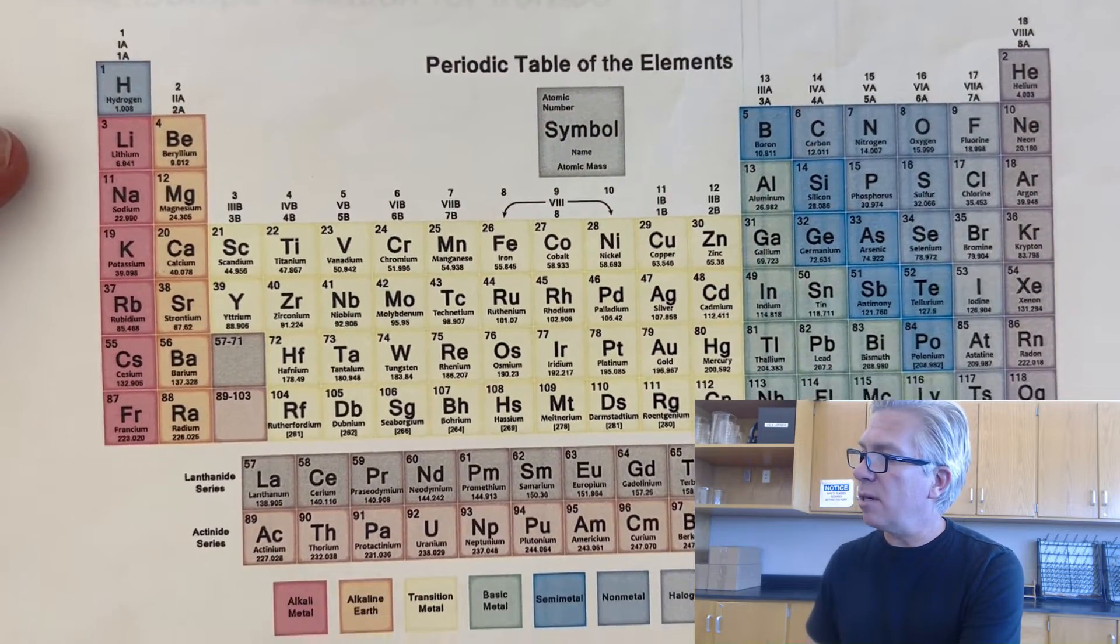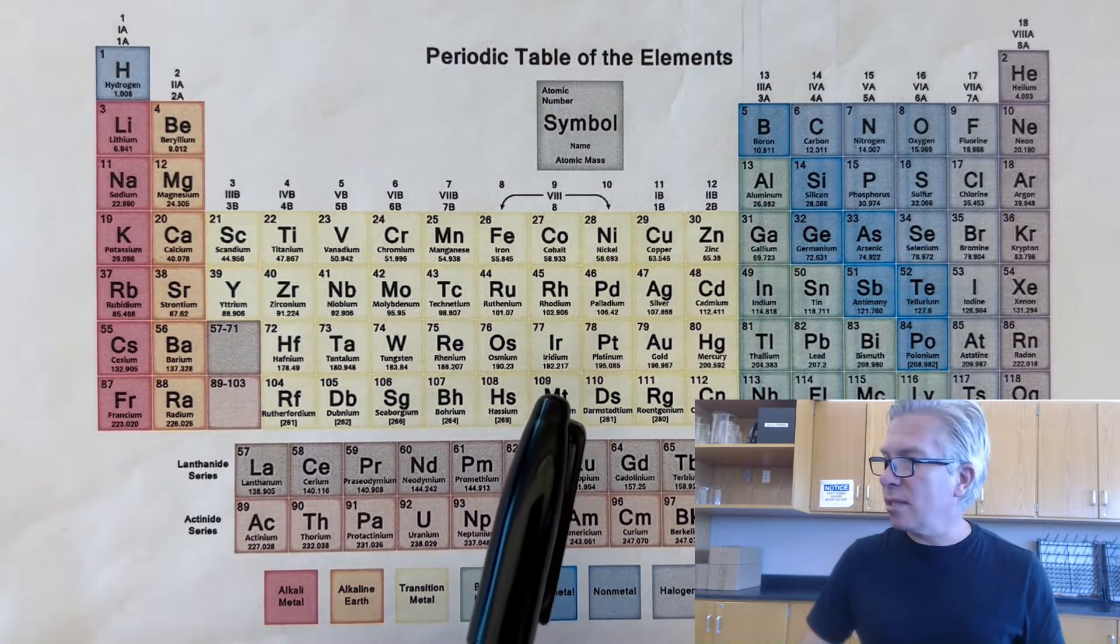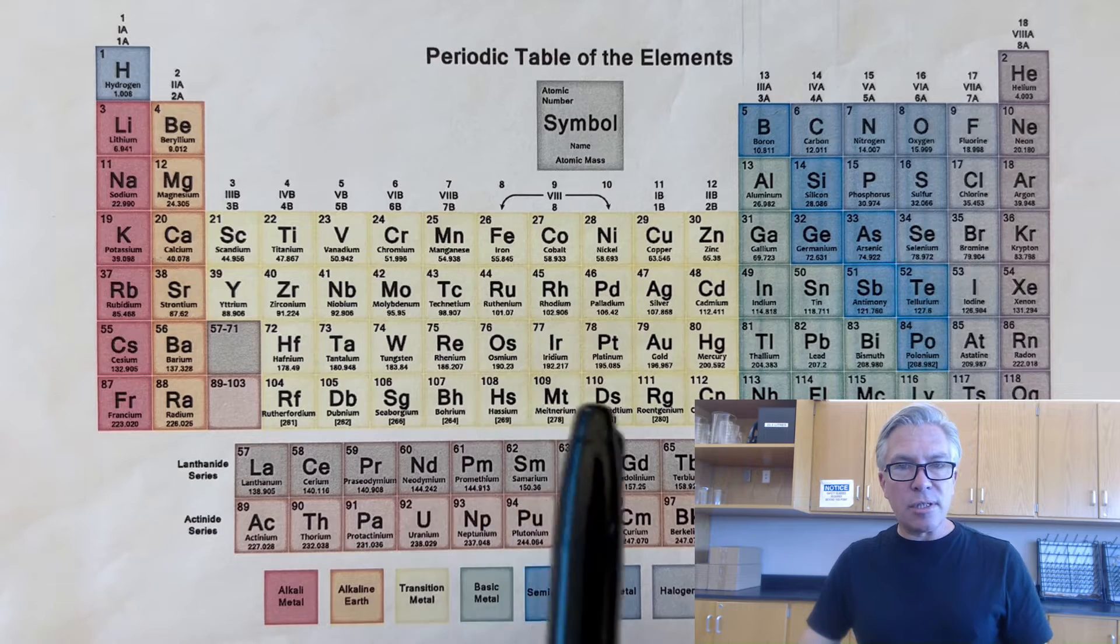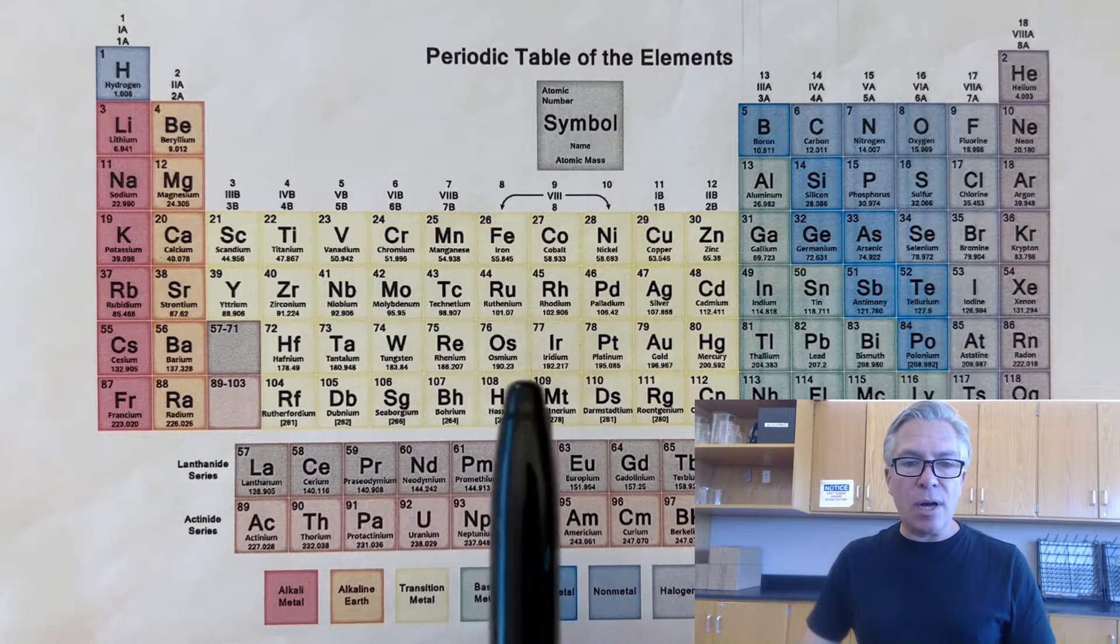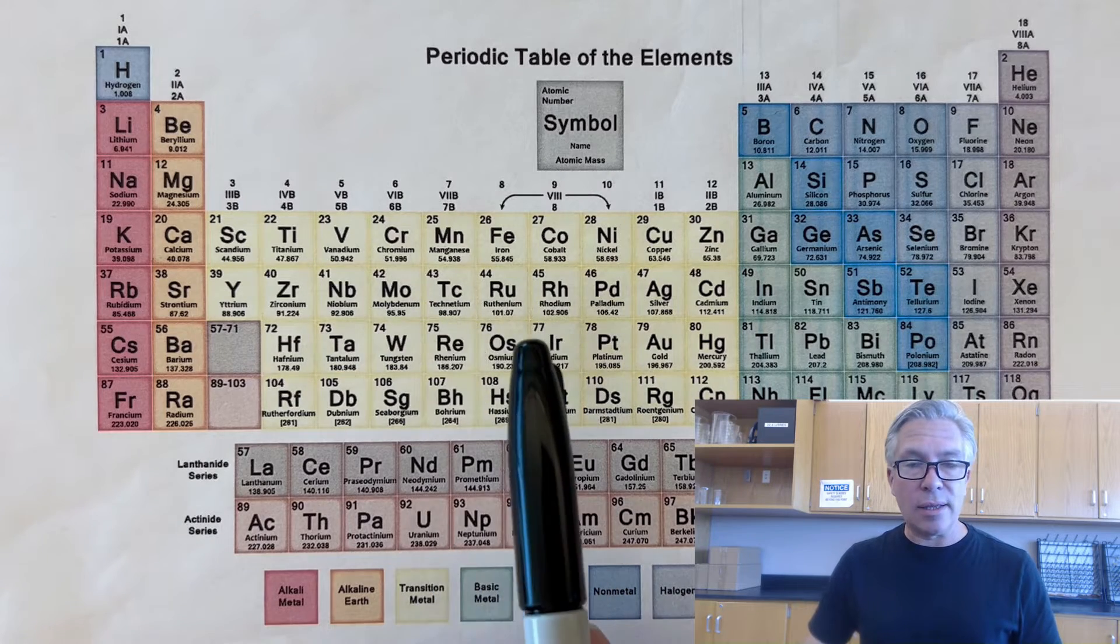If you're watching this video, you are probably learning about isotopes and the fact that all the elements on the periodic table have different versions of themselves. They're not all the same. For example, all atoms of iron are not the same, or all atoms of gold are not the same.